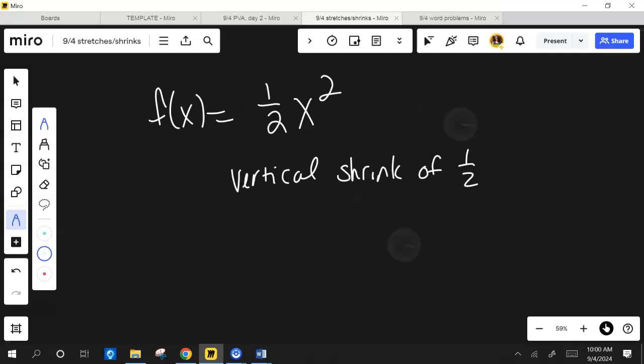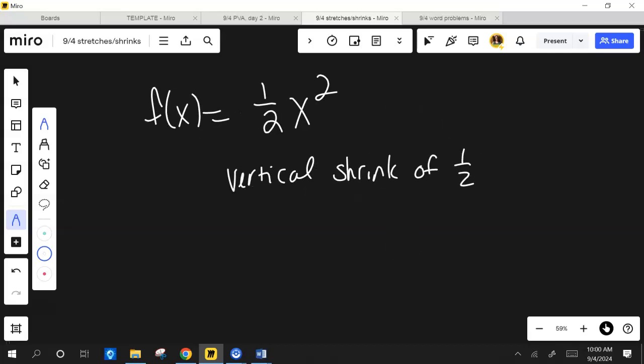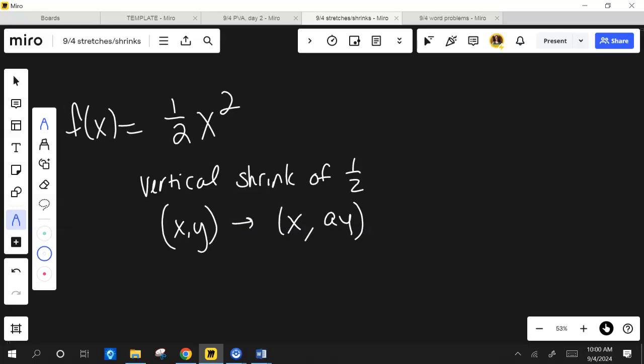Now, if you look over in that last column, it gives you the little change, right? It says x, y becomes x. The x is not impacted because it's a vertical shrink or stretch. But what does it say to do to the y? Or in the case of your sheet here, your orange sheet, it says multiply every y by a, right? So whatever a is, or whatever y is, I multiply it by that factor there.